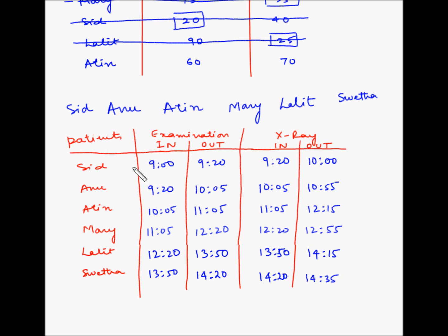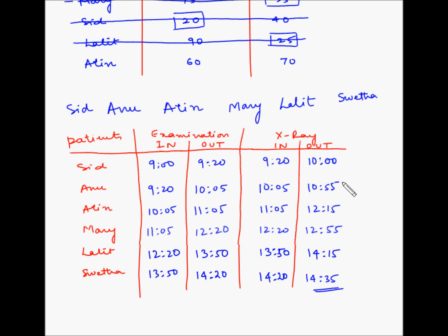So if we schedule the patients in this sequence, all patients can be done by 2:35 in the afternoon. Appointment times for patients entering physical examination are: 9:00, 9:20, 10:05, 11:05, 12:20, and 13:50. If we want to add a buffer between patients, for example a 10-minute gap, then Sid comes in at 9:00, Anu at 9:30, Atin at 10:30, Mary at 11:30, Lalith at 12:30, and Shweta at 2:00 p.m. Depending on how much gap you want between patients, you can schedule accordingly.